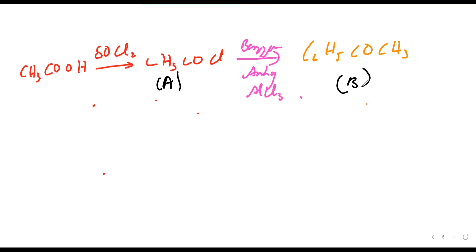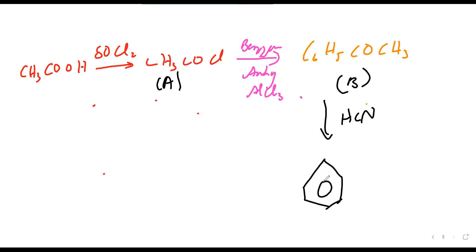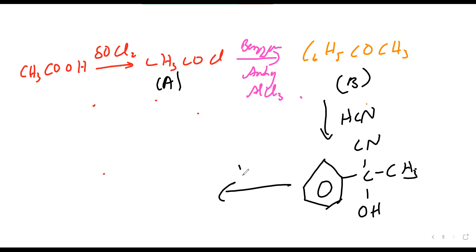Compound B with HCN gives compound C — a benzene ring with CH3, CN, and OH groups attached. Then reaction with water: the cyanide group hydrolyzes to form a carboxylic acid group COOH.